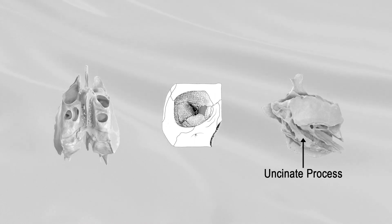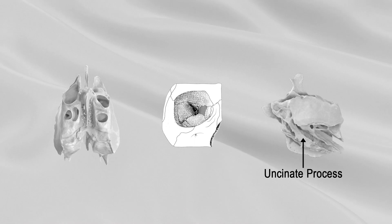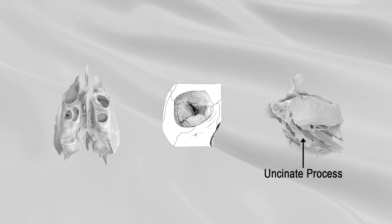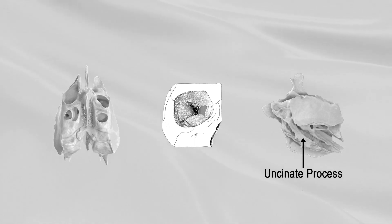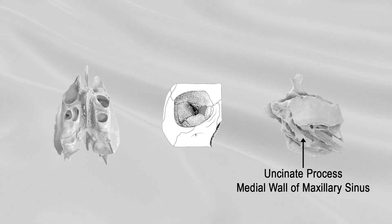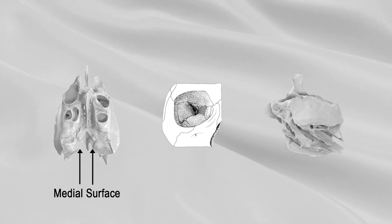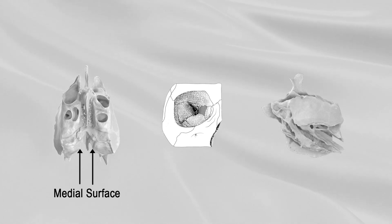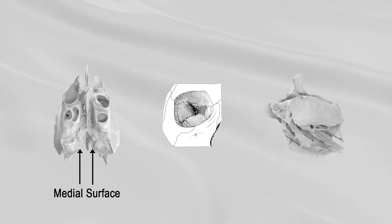The uncinate process is a curved lamina that projects downward and backward in front of the lamina papyracea. It forms a small part of the medial wall of the maxillary sinus and articulates with the inferior concha. The medial surface of the labyrinth forms part of the lateral wall of the corresponding nasal cavity.